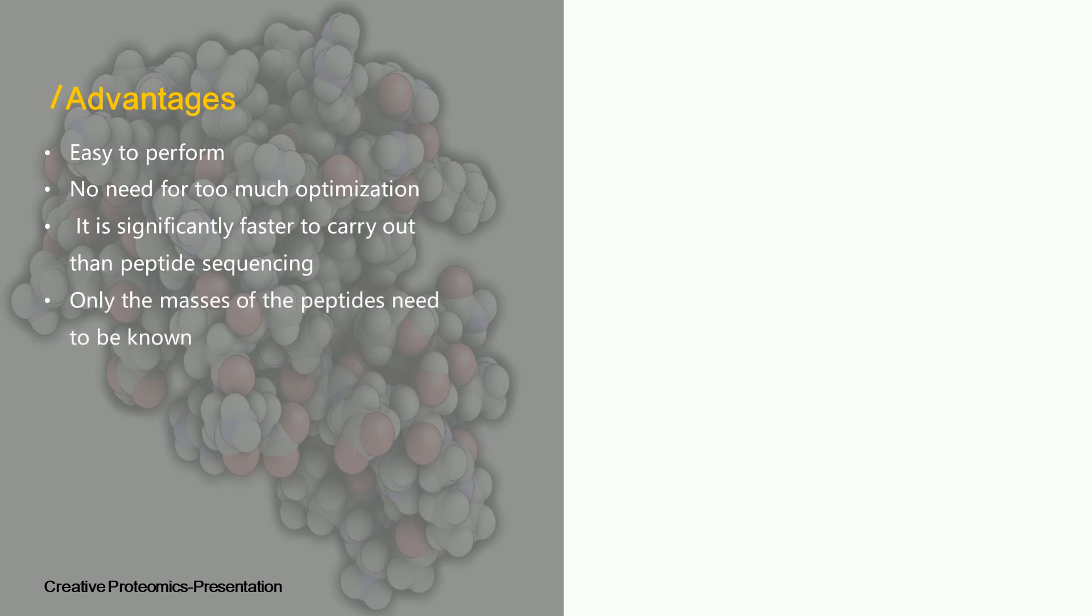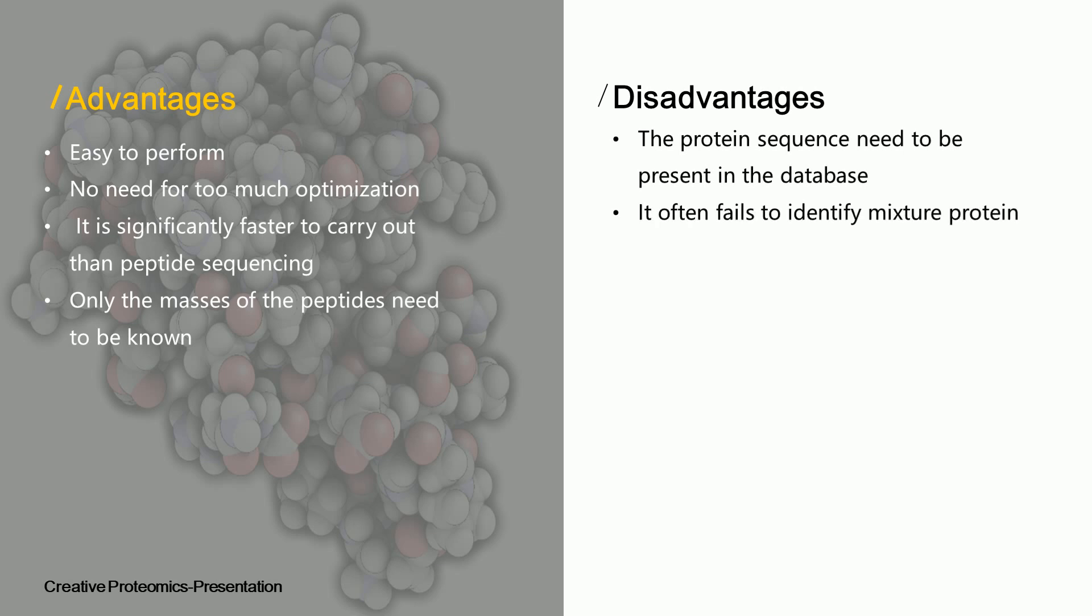Although peptide mass fingerprinting does have some advantages, it has some disadvantages. The protein sequences of interest need to be present in the database. Peptide mass fingerprinting fails to identify protein mixtures which can complicate the analysis and compromise the results. In addition, peptides containing post-translational modifications may not be correctly identified.